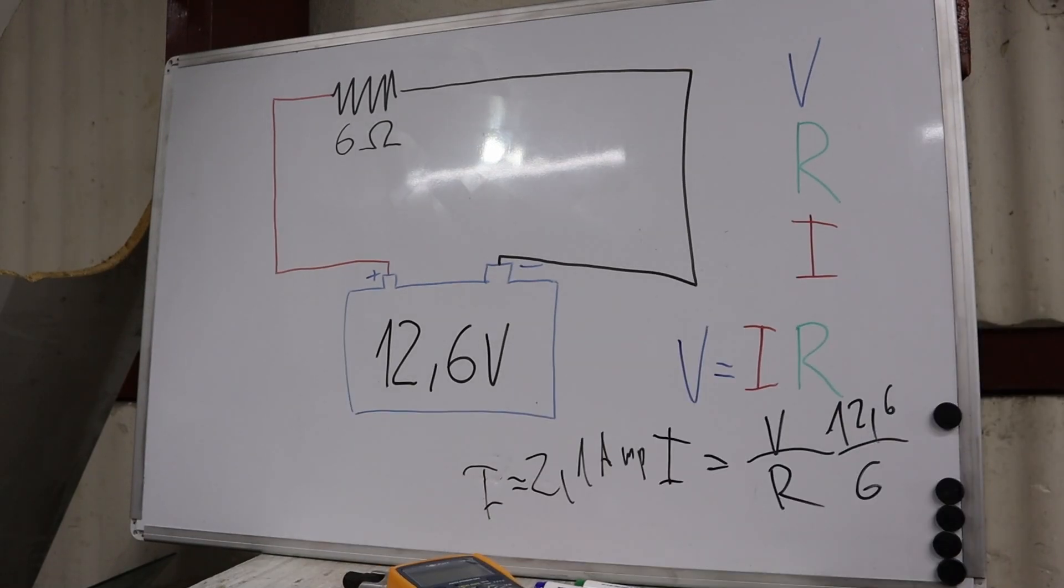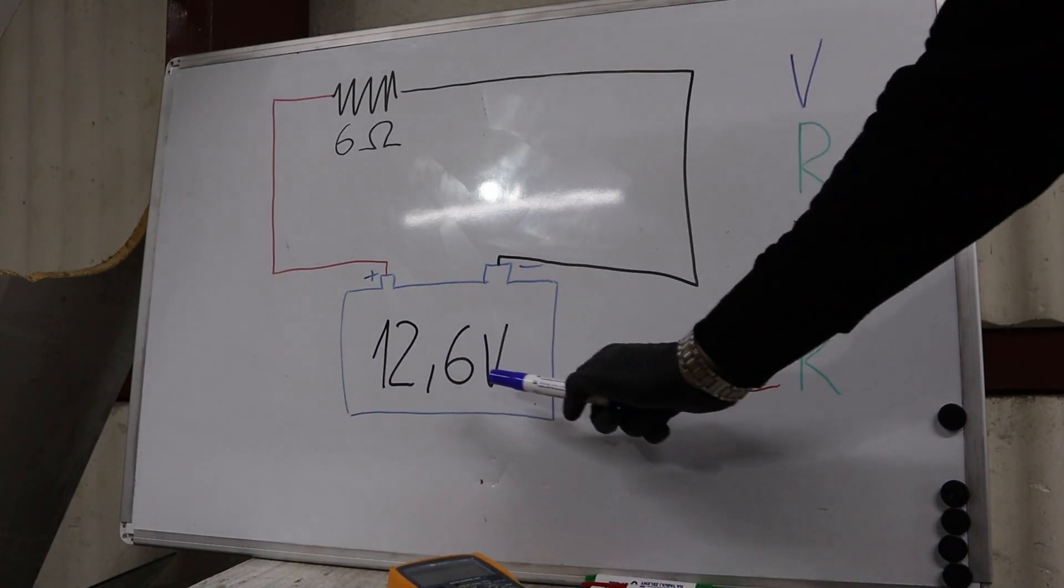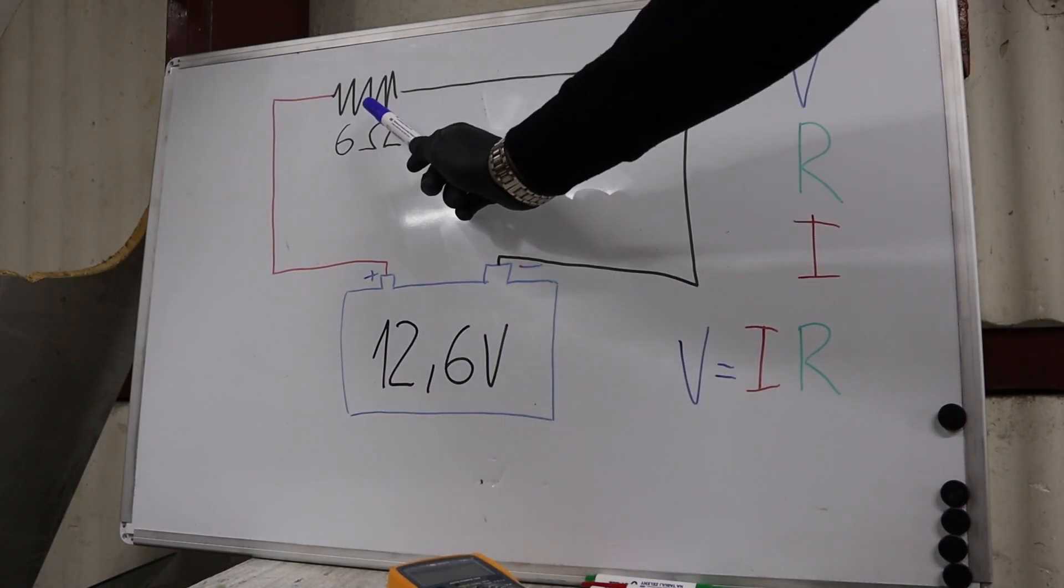Current is measured in amps, resistance in ohms, and voltage in volts. This is a very basic automotive circuit. We have our battery at 12.6 volts and we have a resistor.